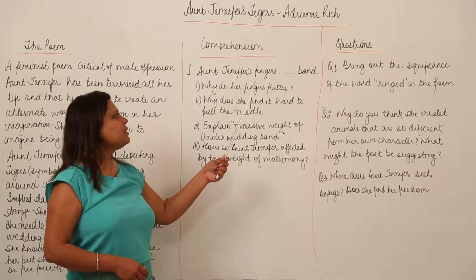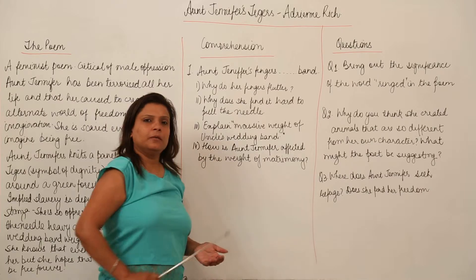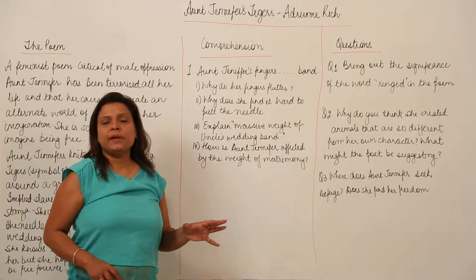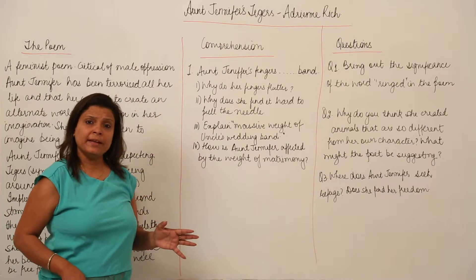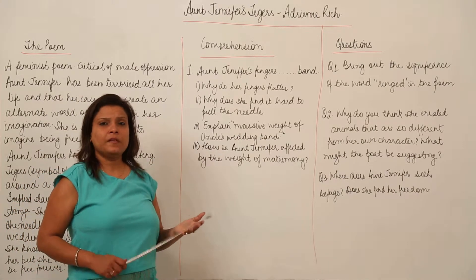Aunt Jennifer's fingers, this is the second stanza. In that, why do her fingers flutter? Aunt Jennifer is a very scared lady. She has been oppressed all her life by her husband, probably before that by her family. And her fingers flutter even to imagine freedom.